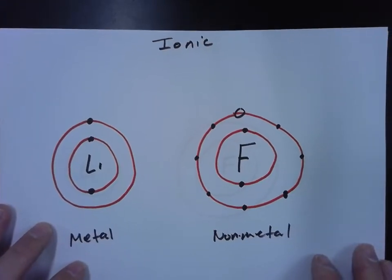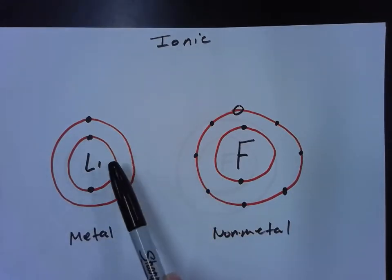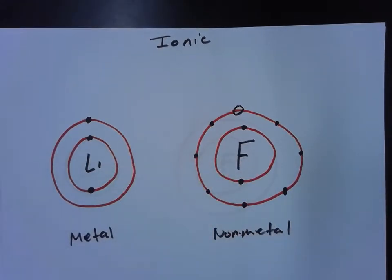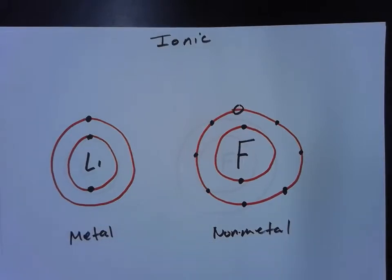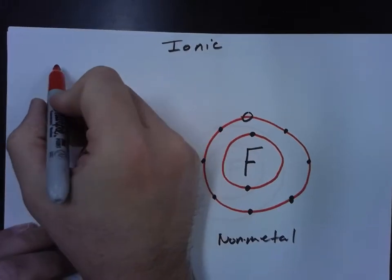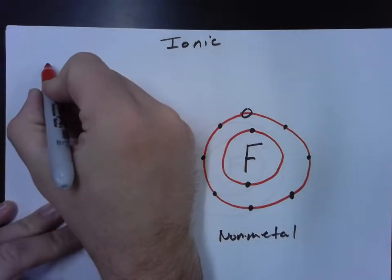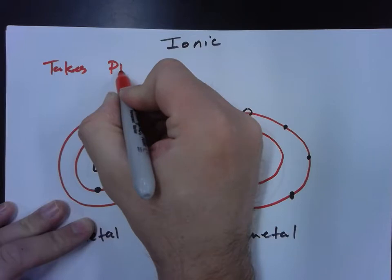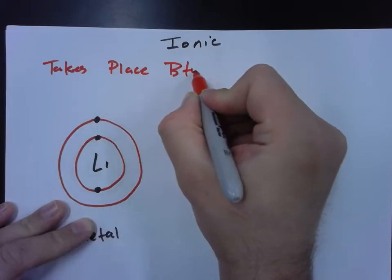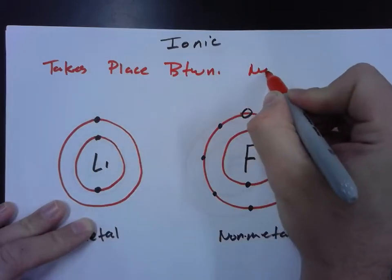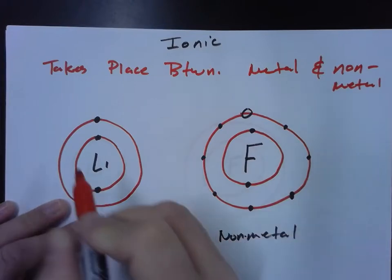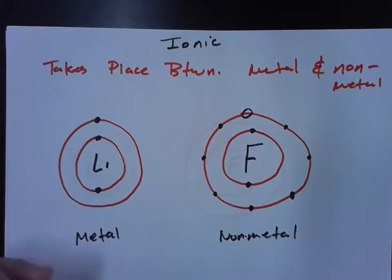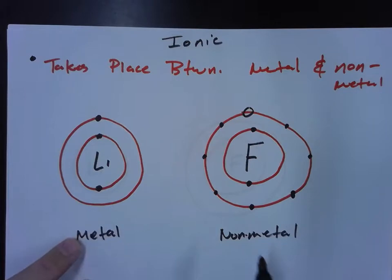Go ahead and draw this and we're going to look at lithium and fluorine in an ionic bond. Ionic bonds take place between a metal and a non-metal. That's their main characteristic. So that's one of the first characteristics. Metal and a non-metal.